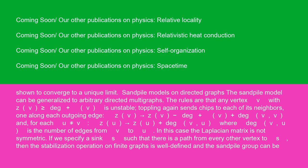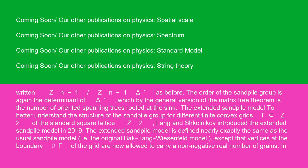Sandpile models on directed graphs: the sandpile model can be generalized to arbitrary directed multigraphs. The rules are that any vertex v with Z(v) ≥ deg⁺(v) is unstable. Toppling again sends chips to each of its neighbors, one along each outgoing edge: Z(v) → Z(v) − deg⁺(v), and for each u ≠ v, Z(u) → Z(u) + deg(v, u), where deg(v, u) is the number of edges from v to u. In this case, the Laplacian matrix is not symmetric. If we specify a sink s such that there is a path from every other vertex to s, then the stabilization operation on finite graphs is well defined and the sandpile group can be written ℤⁿ⁻¹ / ℤⁿ⁻¹Δ̃ as before. The order of the sandpile group is again the determinant of Δ̃, which by the general version of the matrix tree theorem is the number of oriented spanning trees rooted at the sink.